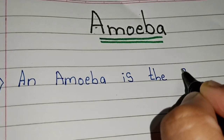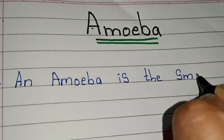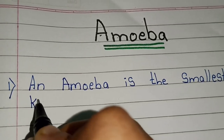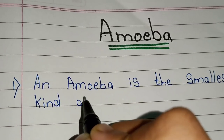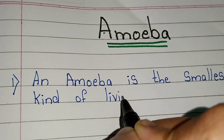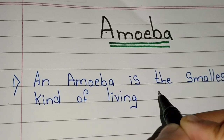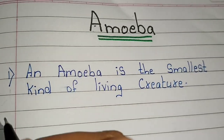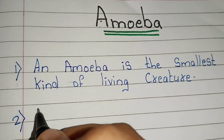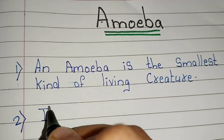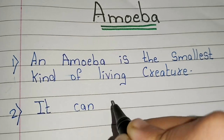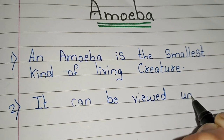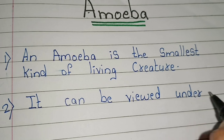An amoeba is the smallest kind of living creature. It can be viewed under a microscope.